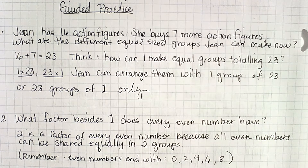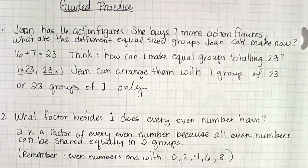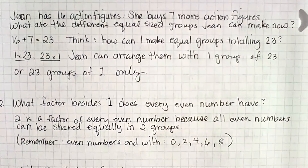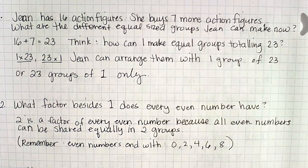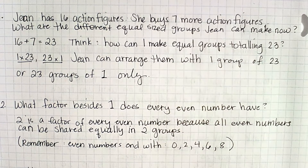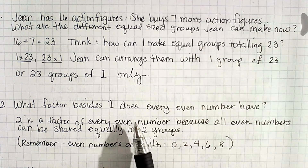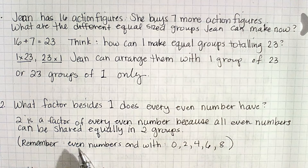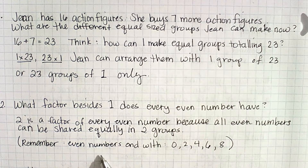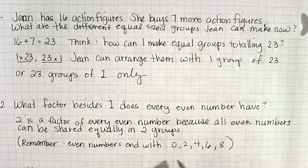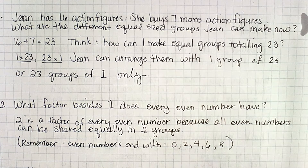For number 2: what factor besides 1 does every even number have? Even numbers can always be divided equally into 2 groups. So 2 is always going to be a factor for every even number. Remember, all even numbers will have a 0, 2, 4, 6, or 8 in the ones place.